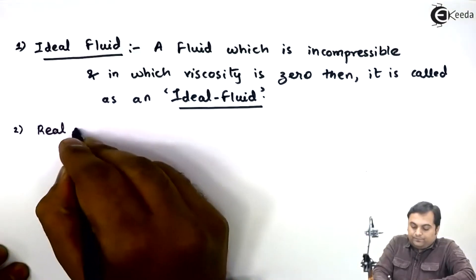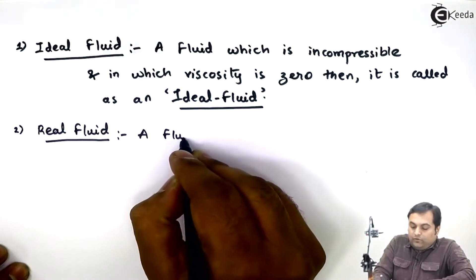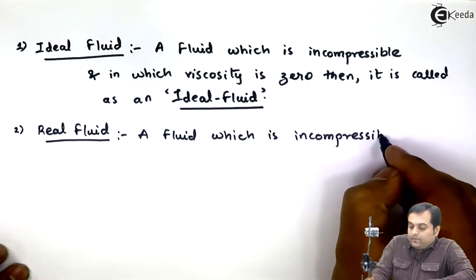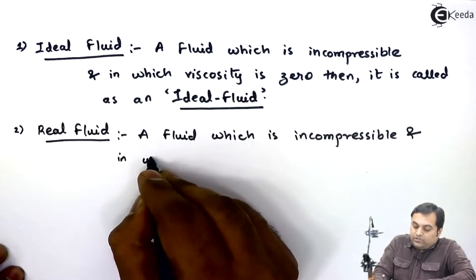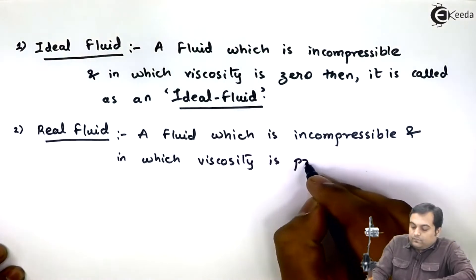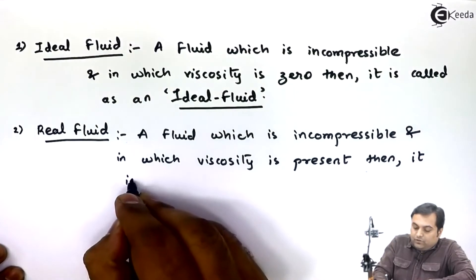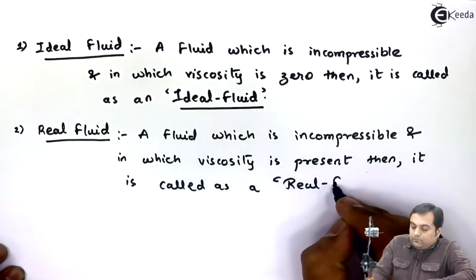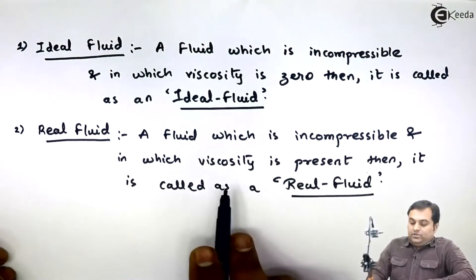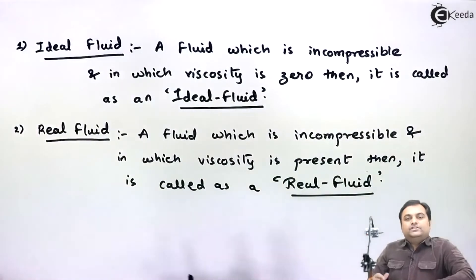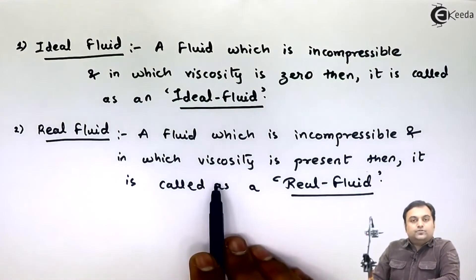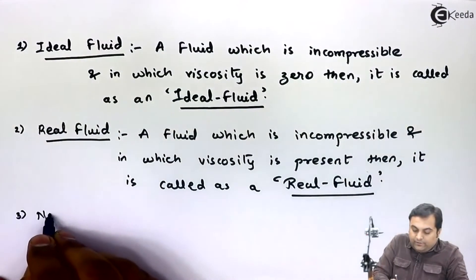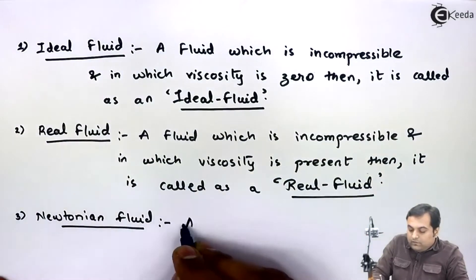Next, real fluid. A fluid which is incompressible and in which viscosity is present is called a real fluid. In the universe, we mostly come across real fluids. Ideal fluids are imaginary; real fluids actually exist.